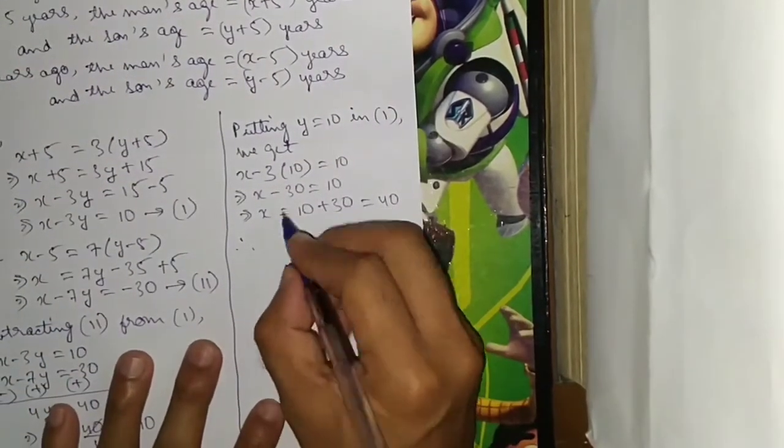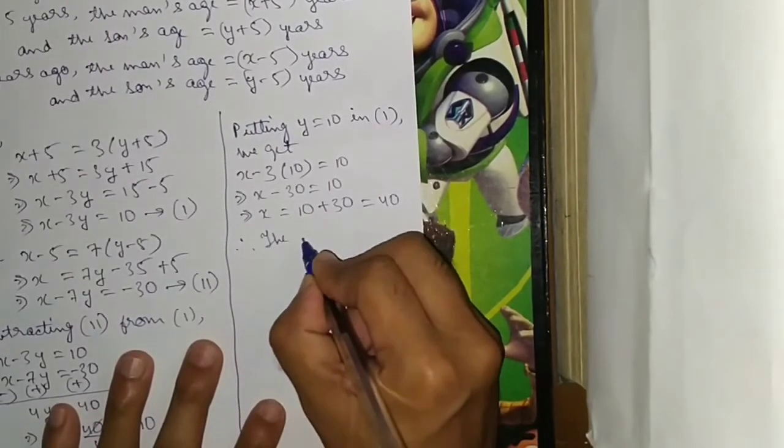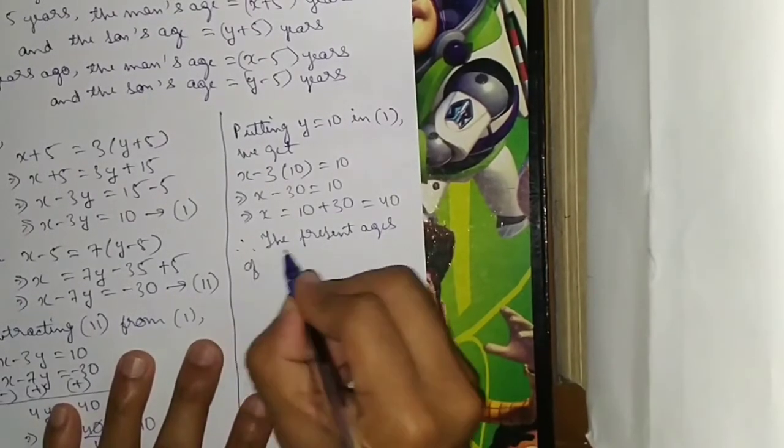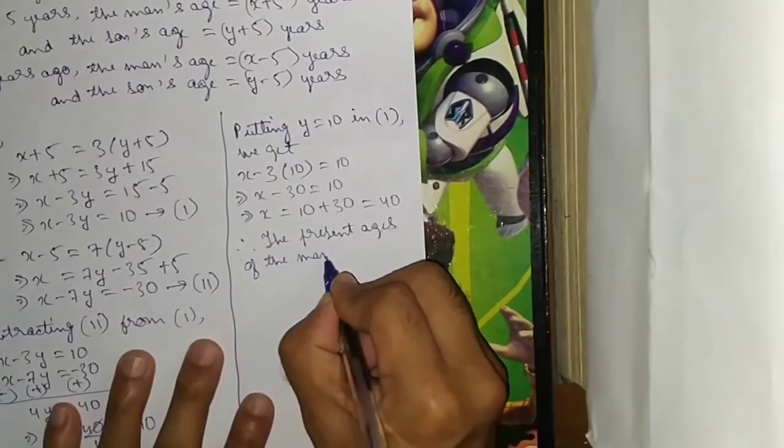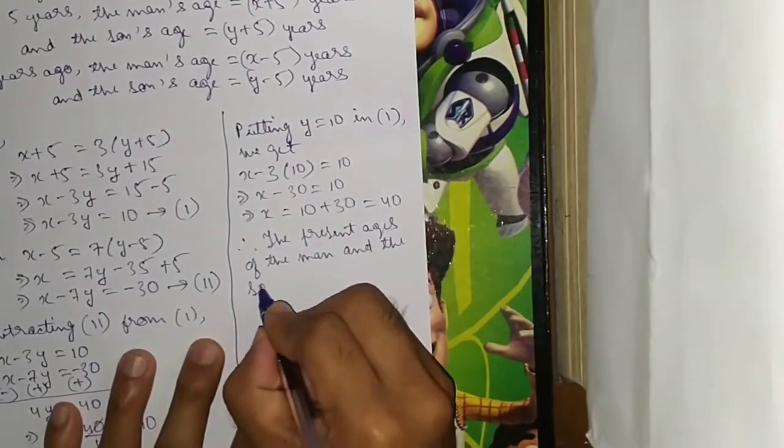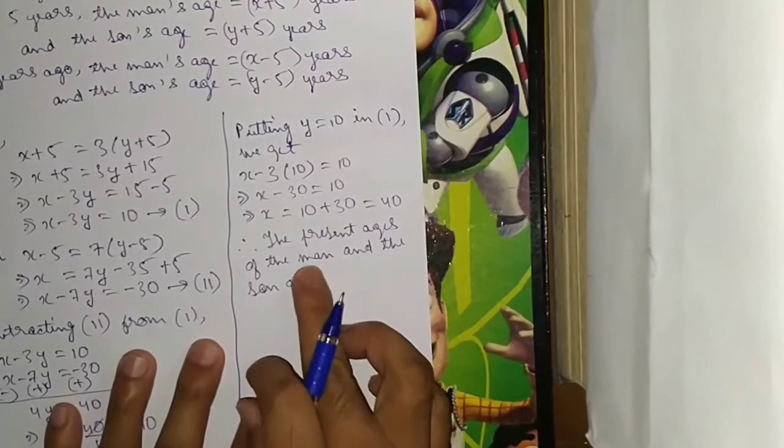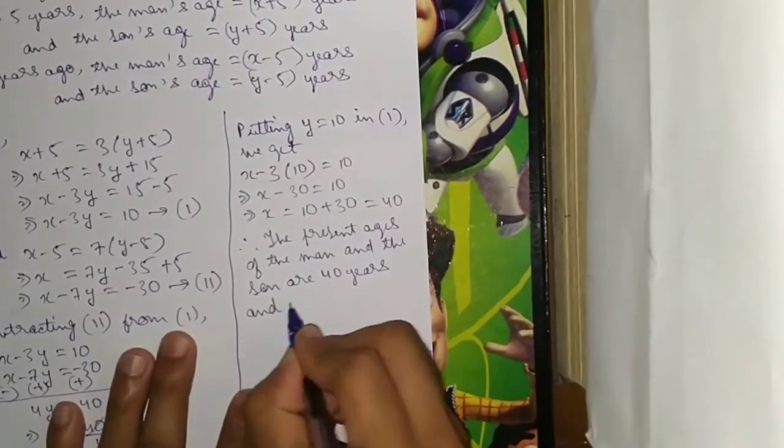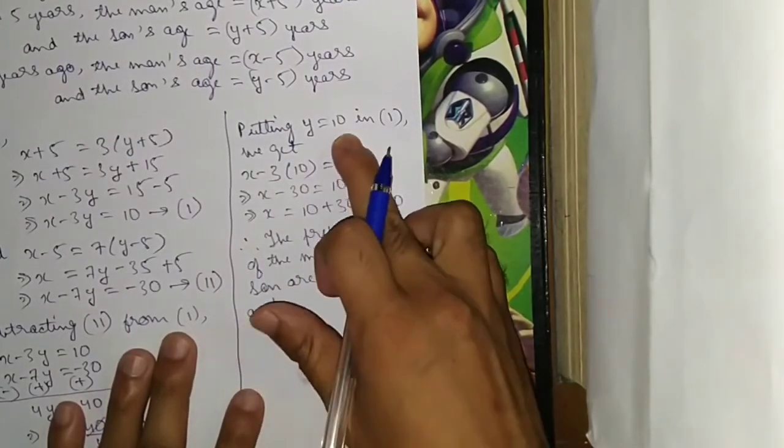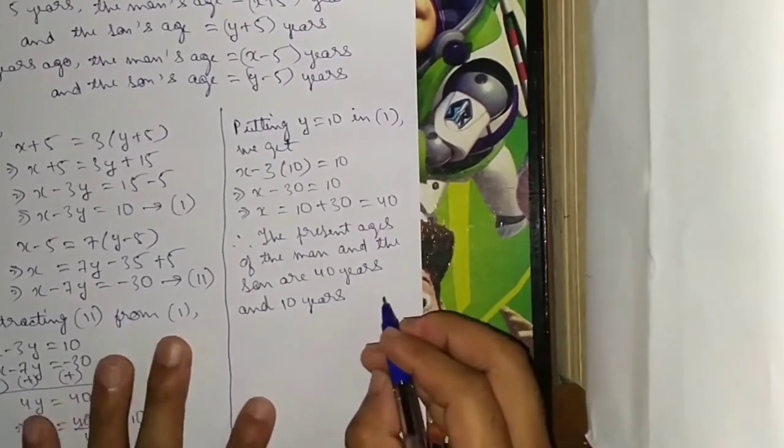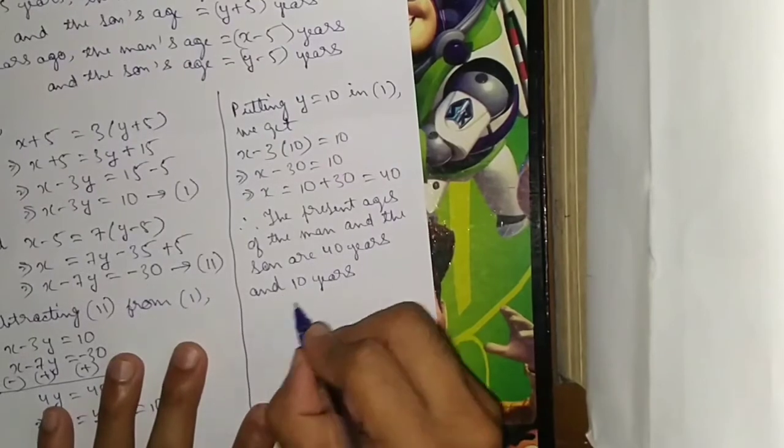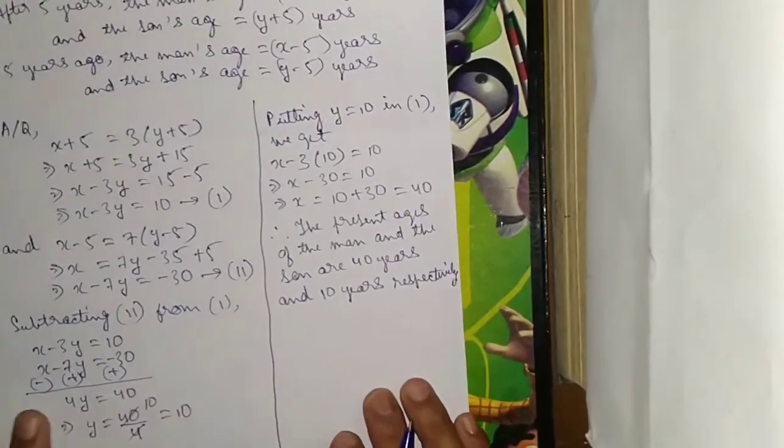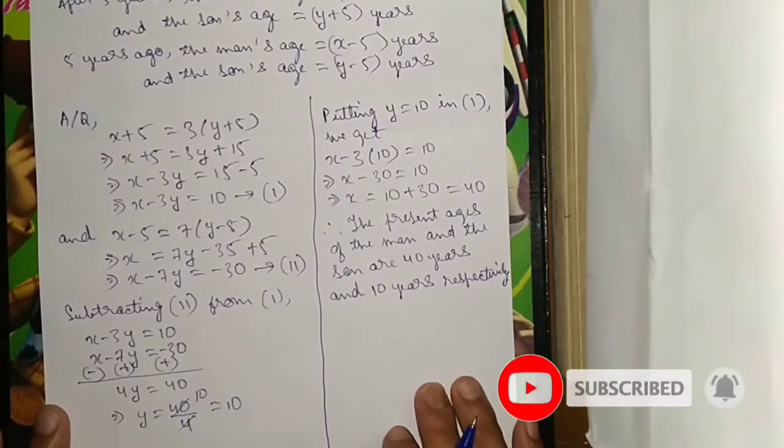Therefore, the present ages of the man and the son are X years and Y years, which are 40 years and 10 years respectively.